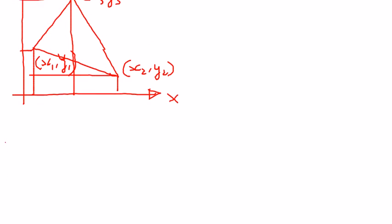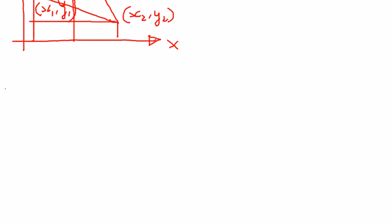The area of the triangle is given as plus or minus one-half the determinant of these points. x1, y1 are the coordinate points for the first corner of the triangle, and then we put a one after that.